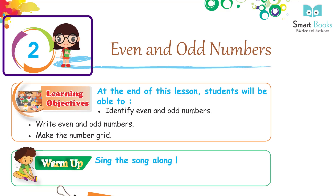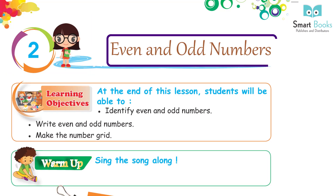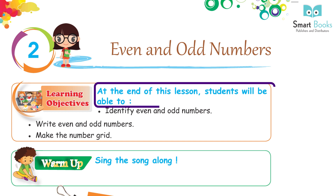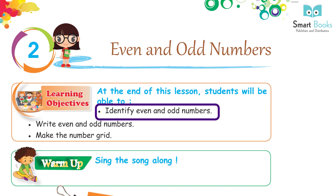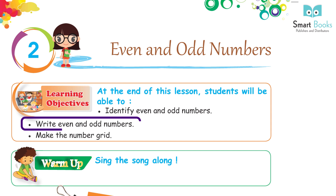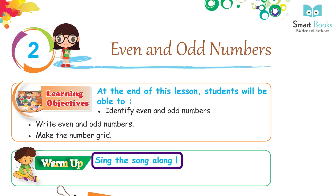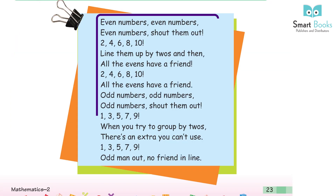Chapter 2: Even and Odd Numbers. Learning objectives — at the end of this lesson, students will be able to identify even and odd numbers, write even and odd numbers. Warm up: sing the song along.